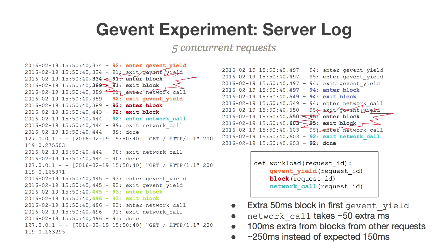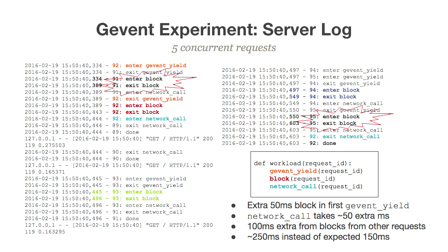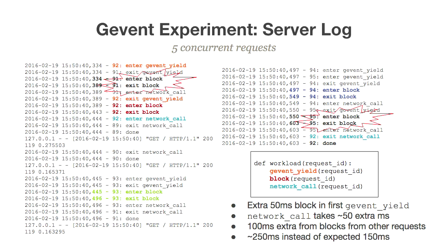Looking at the log for five concurrent requests, we're entering the GEvent yield for request 92 — which shouldn't take any time — but we see request 91's blocking call (50ms) running first. When you're blocking the process, everything else gets blocked behind it. Then during our 100ms network call, we can fit two other blocking calls, but instead we get three. This request ends up taking about 250 milliseconds instead of 150.